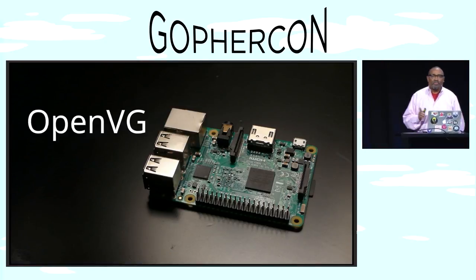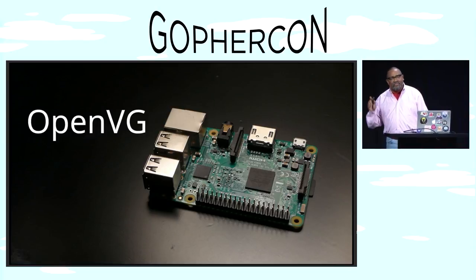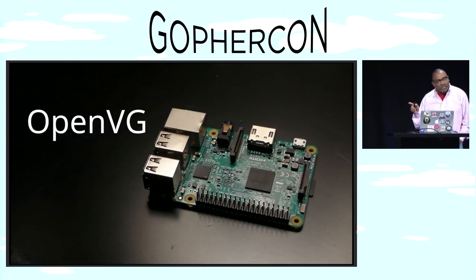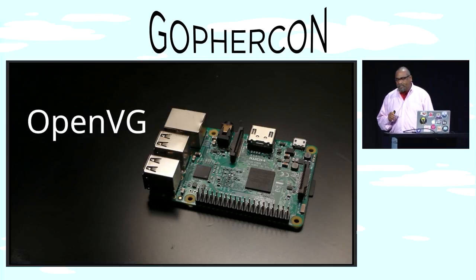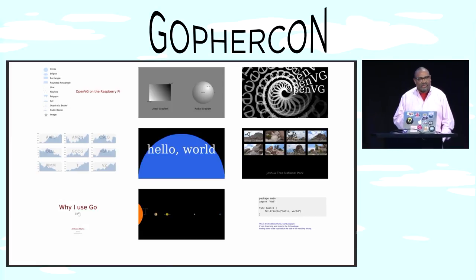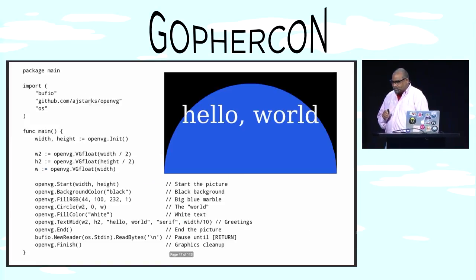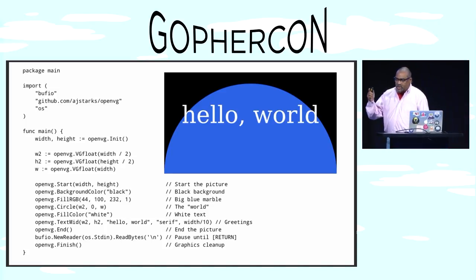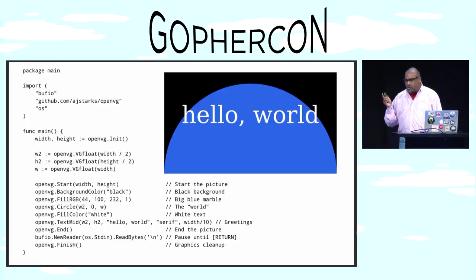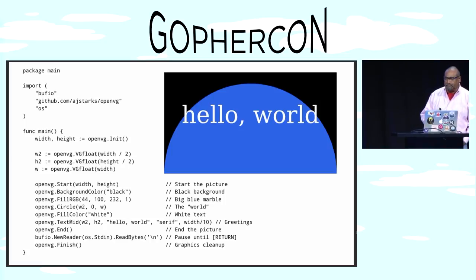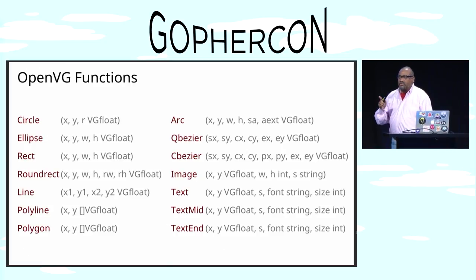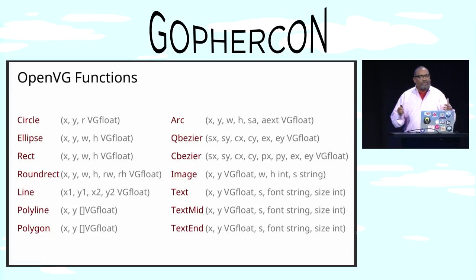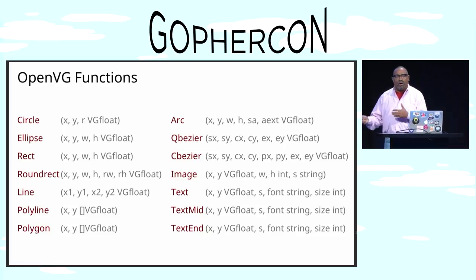The next tool I want to talk about is OpenVG. OpenVG is a wrapper to a native C library that comes on the $35 Raspberry Pi. This device has a GPU with accelerated 2D graphics. Here are the clients for that — the kinds of things you might want to build. Here's its hello world: the same kind of idea — between a start and an end, you think about your background colors, circles, and text. You've got these higher-level functions that a designer might think of in terms of circles, ellipses, arcs, and curves.